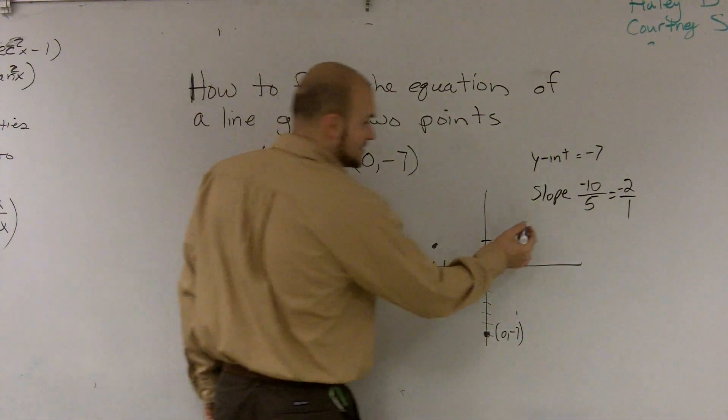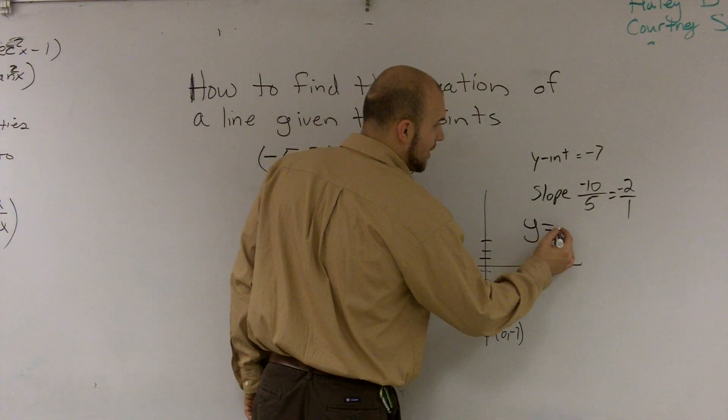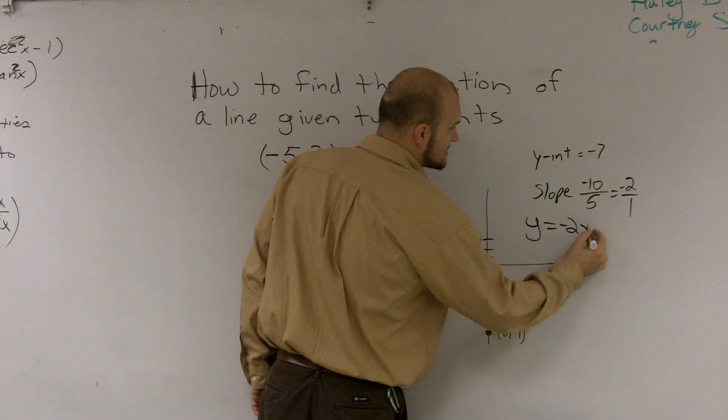So essentially, if I wanted to write the equation, I'm going to show what the answer is. y equals negative 2x minus 7.